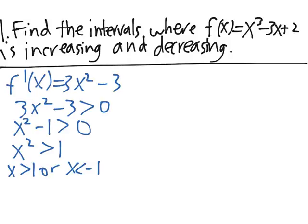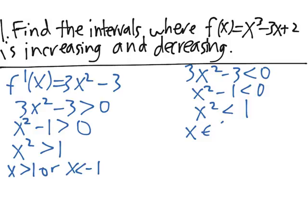Then to find out when the derivative is negative, we have 3x² - 3 less than 0. So x² - 1 is less than 0 by dividing by 3, and then x² is less than 1, or x is in the interval (-1, 1).